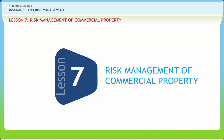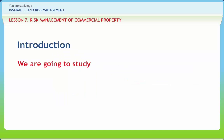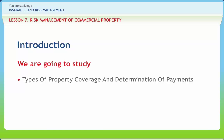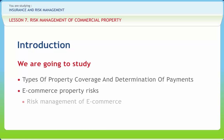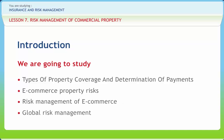Risk Management of Commercial Property. We all know property can be classified in a number of ways, including its mobility, use value and ownership. Sometimes these varying characteristics affect potential losses, which in turn affect decisions about which risk management options work best. In this lesson, we will study types of property coverage and determination of payments, e-commerce property risk, risk management of e-commerce and global risk management.